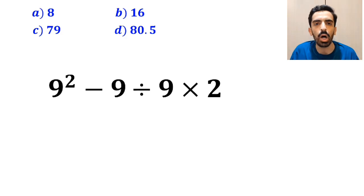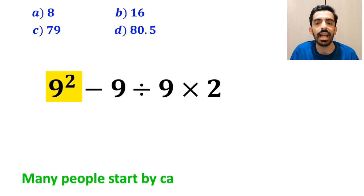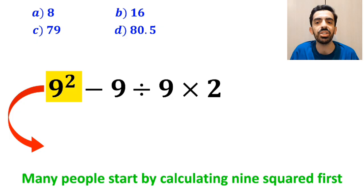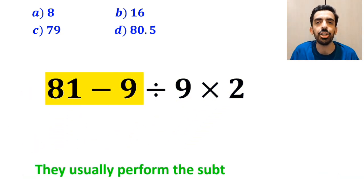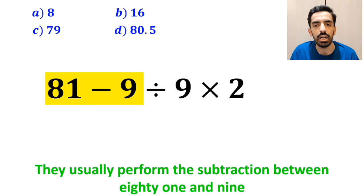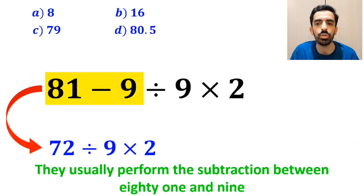Let's break it down and solve it together. To solve this problem, many people start by calculating 9 squared first, and instead of the original expression, they rewrite it as 81 minus 9 divided by 9 times 2. In the next step, they usually perform the subtraction between 81 and 9, simplifying this expression to 72 divided by 9 times 2.